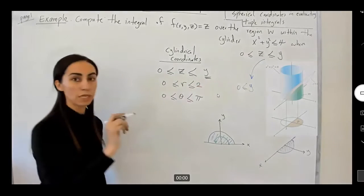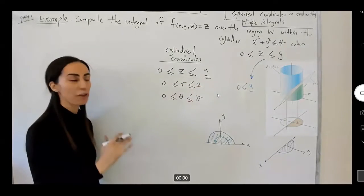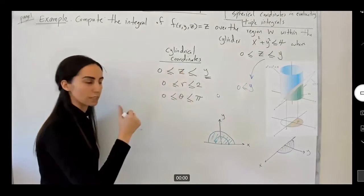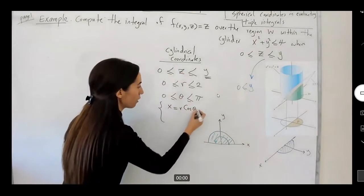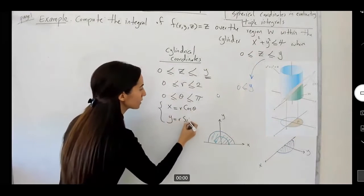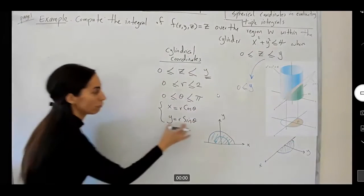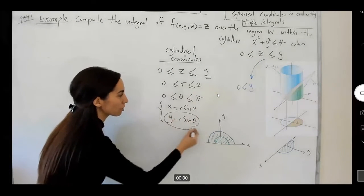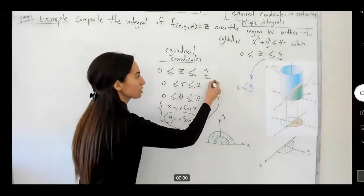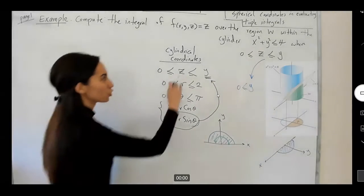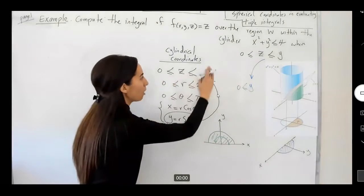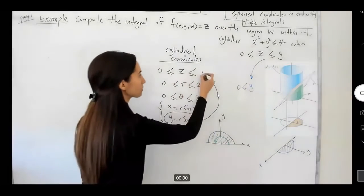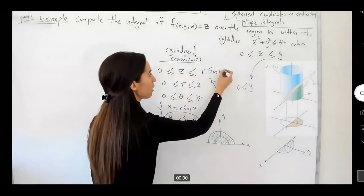Well, I'm converting everything into r and theta except for my z. I know that x is r cosine theta. Y is r sine theta. So, I have to substitute that here. So, my z is bounded below by 0 and on top it's bounded by r sine theta.